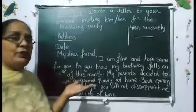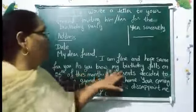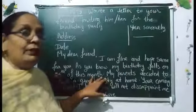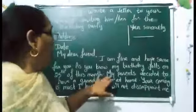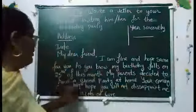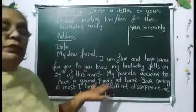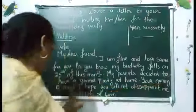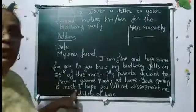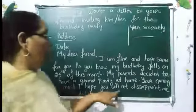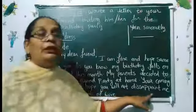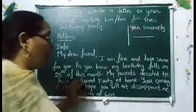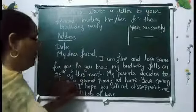As you know, my birthday falls on the 25th of this month. My parents decided to have a grand party at home. You are coming is a must. I hope you will not disappoint me. You can also add lines like 'I am waiting for you.'